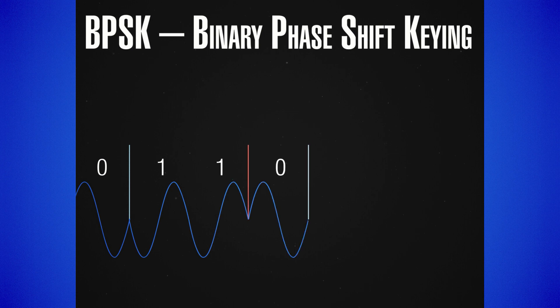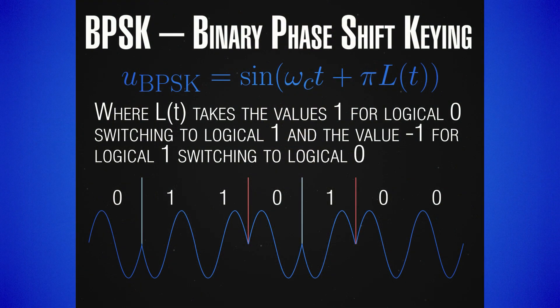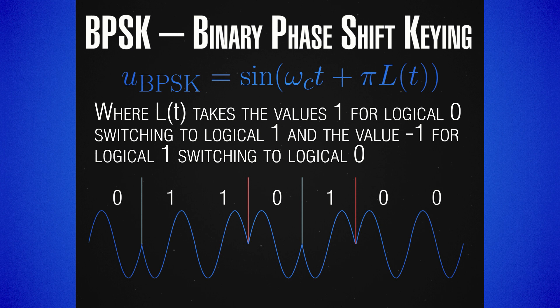There is one more characteristic, just like with analog modulations, and this is the phase. We can include a logical function which changes the phase of the signal depending on the value of the bit. A very simple realization is the so-called BPSK — binary phase shift keying. It is binary because we are changing the phase by only two values: plus pi (plus 180 degrees) and minus pi (minus 180 degrees). Any time we go from 0 to 1, we have one value of the logical function, and any time we switch from 1 to 0, we have the other. So each bit does not correspond to a specific phase value, but only to changes in the phase. By detecting these jumps and knowing the original bit, we can immediately restore the full sequence.